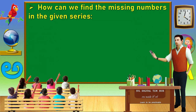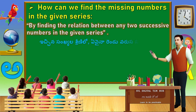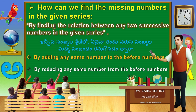How can we find the missing numbers in the given series? By finding the relation between any two successive numbers in the given series. Keep in mind: two successive numbers. For example, by adding or by reducing any same number to the preceding numbers.